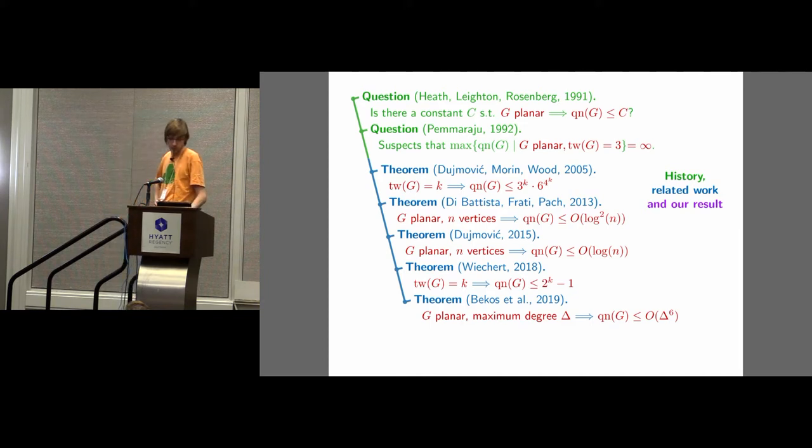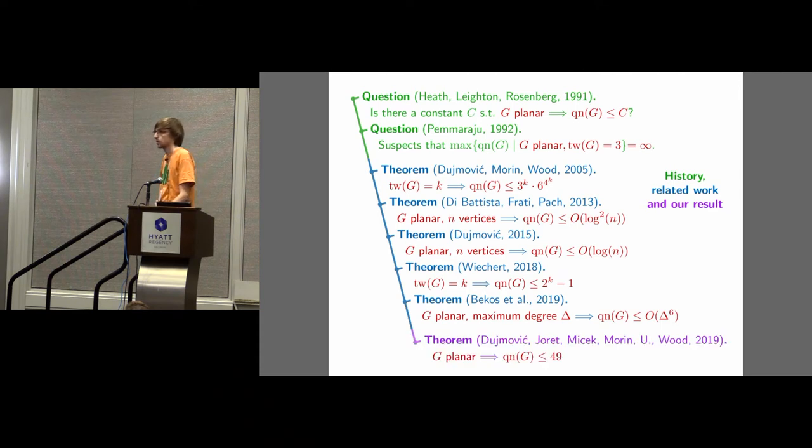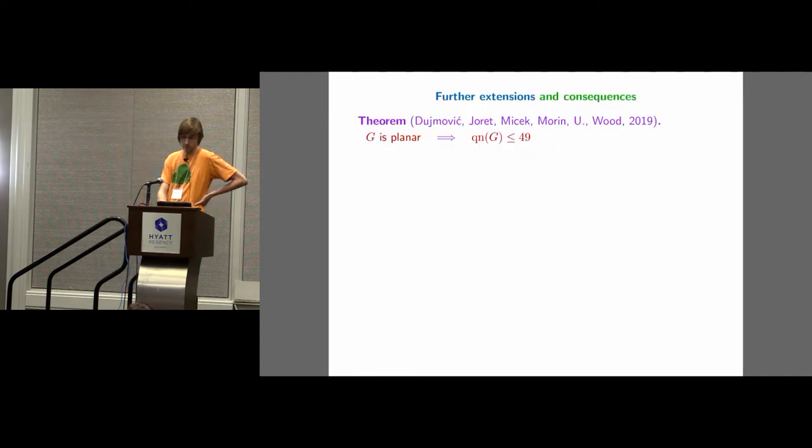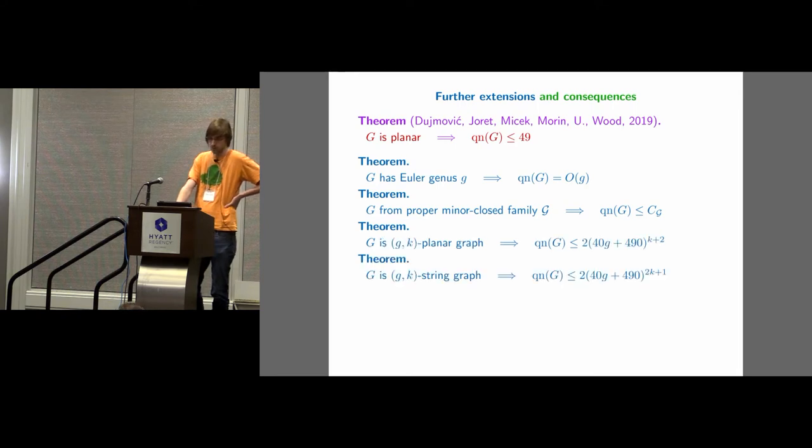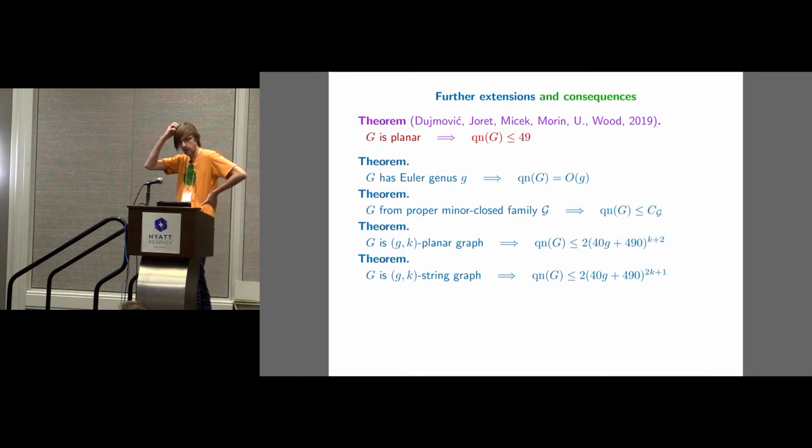And the next thing was last year, or actually this year, published this year, where we could prove that for planar graphs, we get a function, a polynomial function, in terms of the maximum degree of the graph instead of the number of vertices. And now, finally, what I want to present here is there is such a constant, and it's at most 49. So, let's talk a little bit about some extensions that we also prove in the paper. Some extensions include that for bounded Euler genus, you always get a constant Q number.